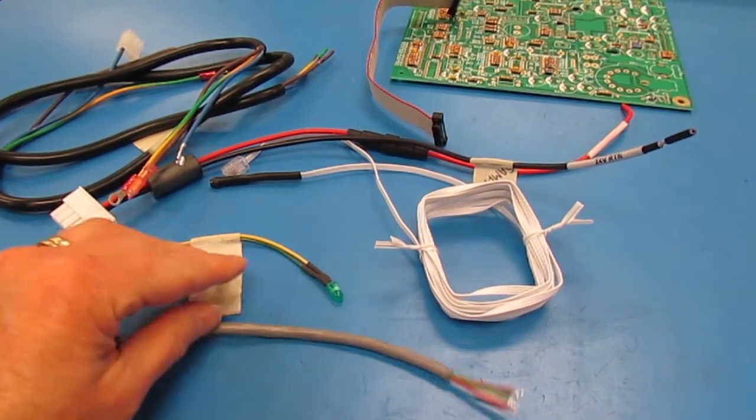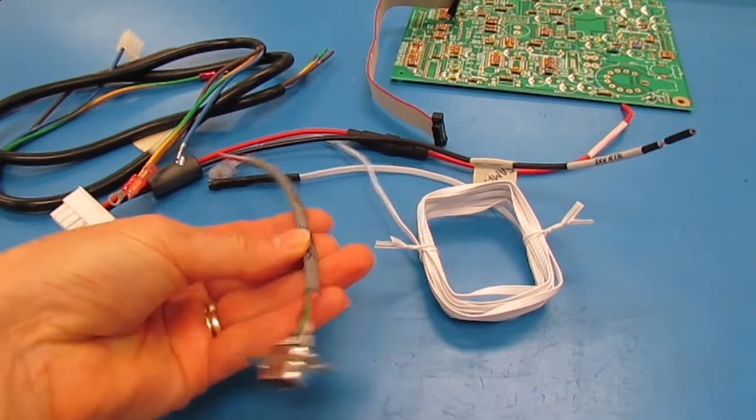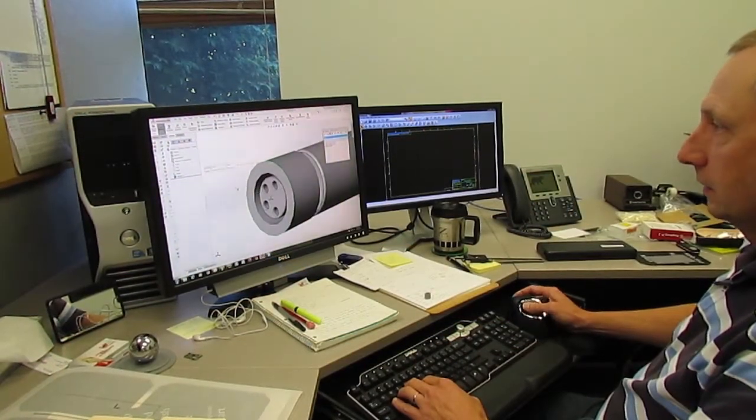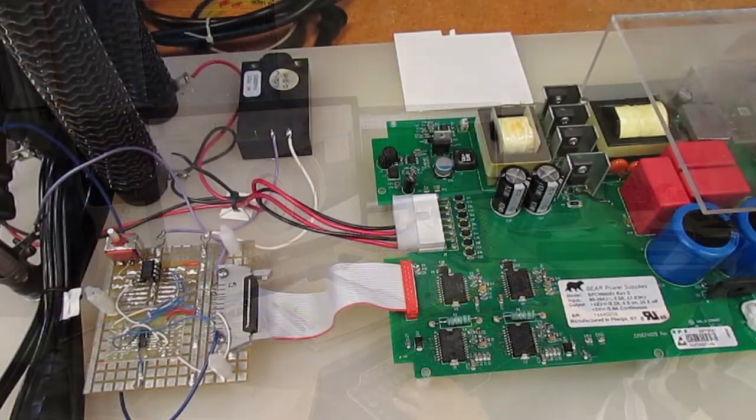Printed circuit boards often need a wire harness or cable assembly for connection to power input or other parts of the electronic system. One of the things a designer needs to think about with cable assemblies is the need for strain relief.